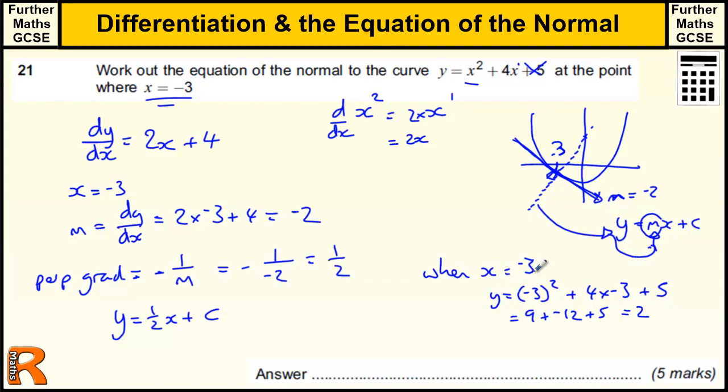So when x is minus 3, y equals 2. And because that's on this line, this curve, and this perpendicular line,